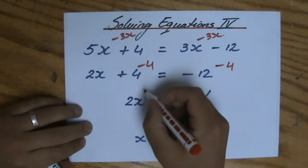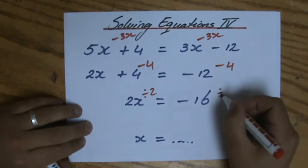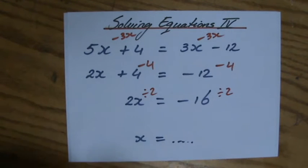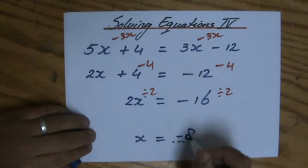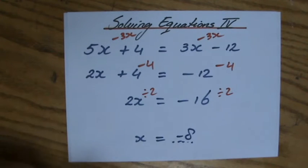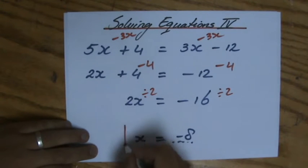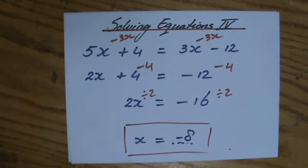And 2 times X, so the inverse operation of times, is dividing, and minus 16 divided by 2 is minus 8. There we go. That's my answer. X equals minus 8. And the beauty of this is that you can always check if you're right or wrong.